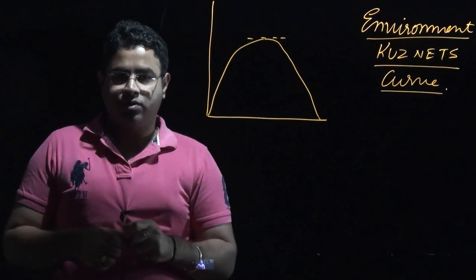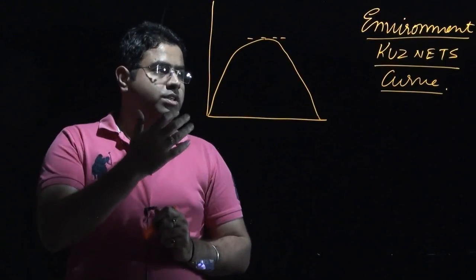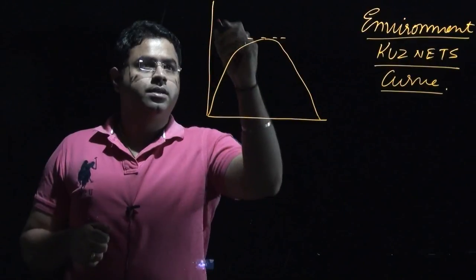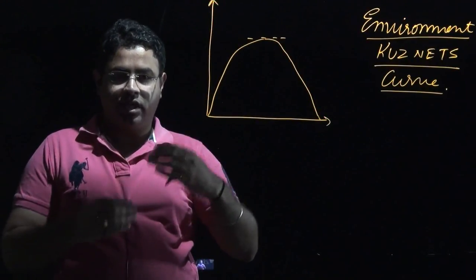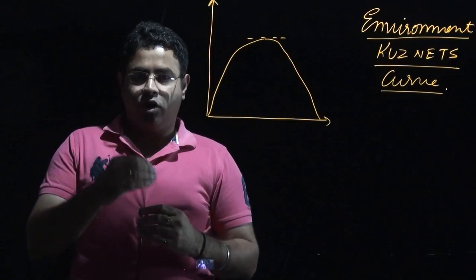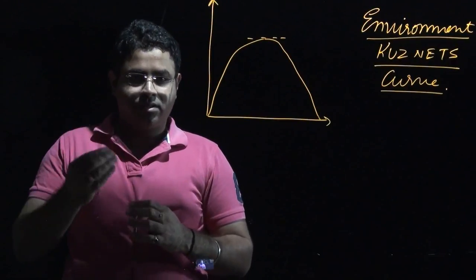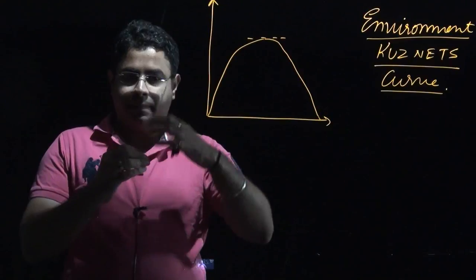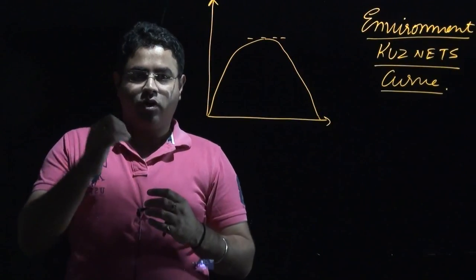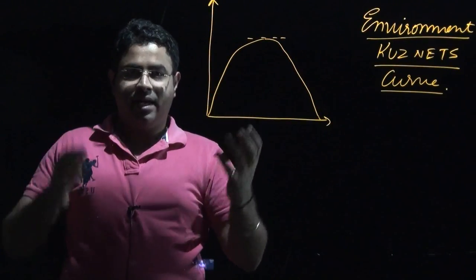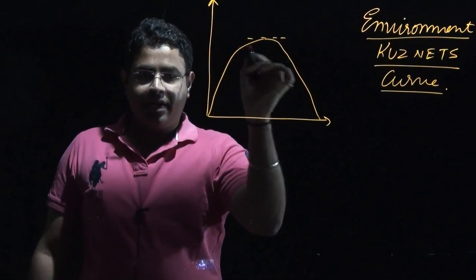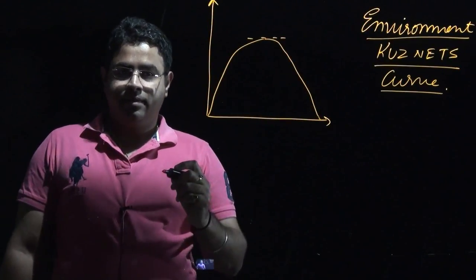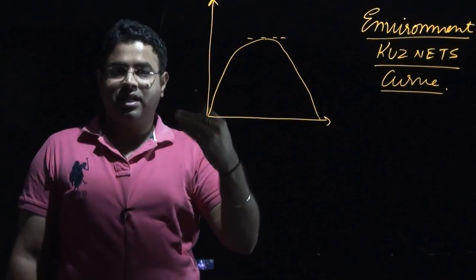What is this Environmental Kuznets curve? According to this curve, as countries grow, as the size of the economies grow, as the economy becomes more advanced, as per capita income rises, as GDP increases, there is increase in the plundering of the environment. There is increase in unsustainable development.